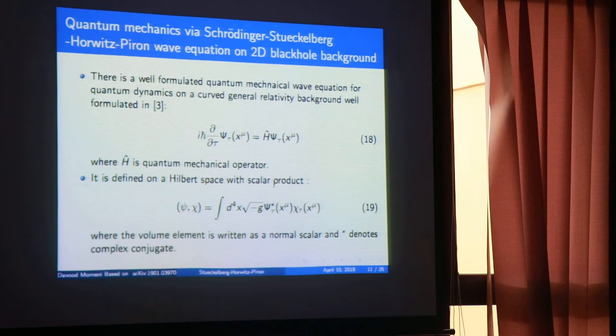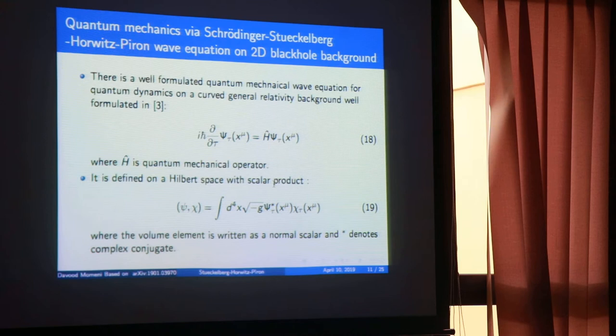Like any Schrödinger equation, you need to build the Hilbert space — you need a pair of functions and a scalar product of two functions. It was shown that this equation defines a positive norm for the wave vectors. According to equation 18, the norm of the functions is always positive, so this is a genuine Hilbert space, like any other quantum problem.